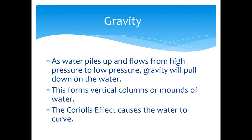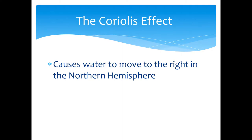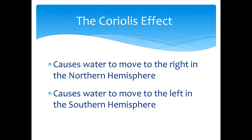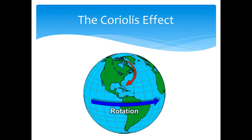We already talked about gravity and the Coriolis effect. Because of the earth's rotation, you can see that wind moves clockwise in the northern hemisphere and counterclockwise in the southern hemisphere.